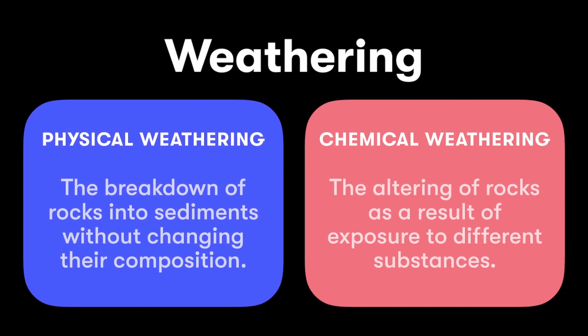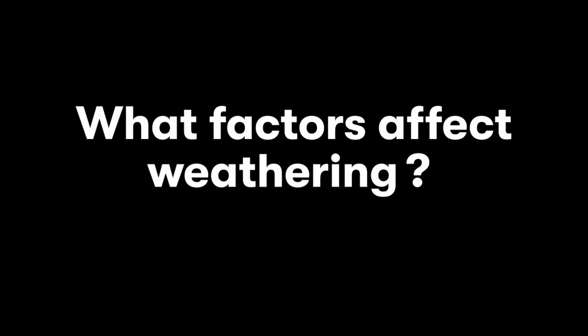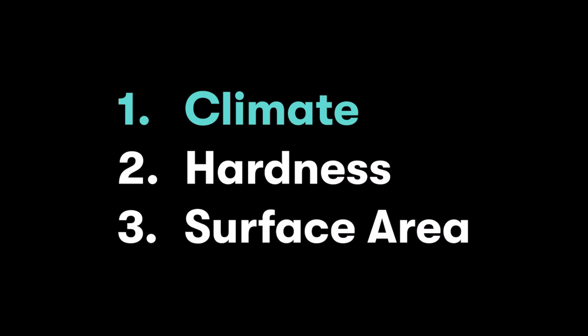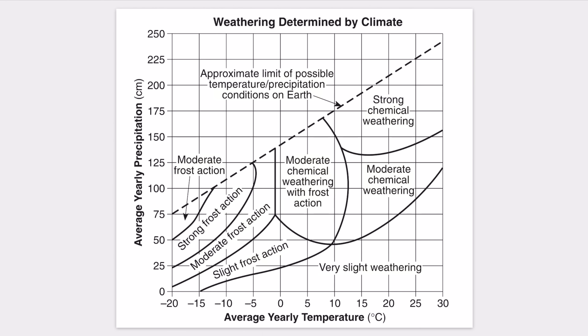Now that we have both types of weathering summarized, the last question is: what affects weathering? What dictates the type of weathering in a region and how fast it happens? We have three main factors: climate, hardness of the rock, and surface area. Starting with climate, we look at a commonly used chart in geology that shows the effect of temperature and moisture on what type of weathering will take place.